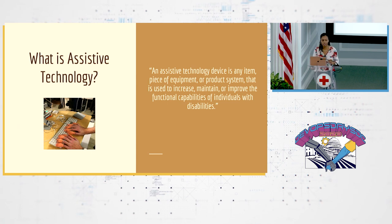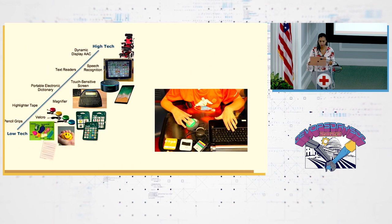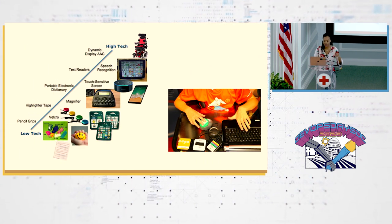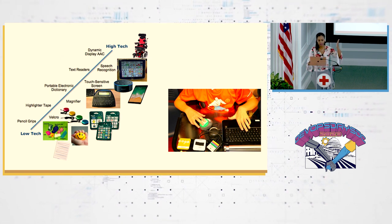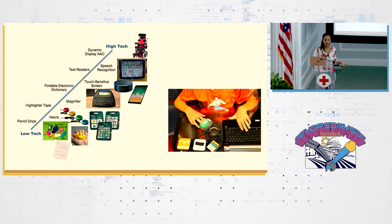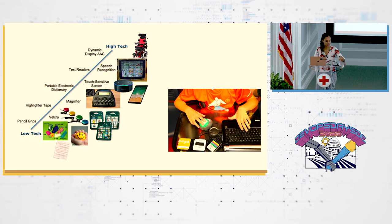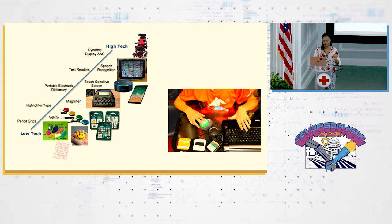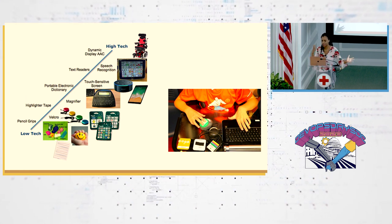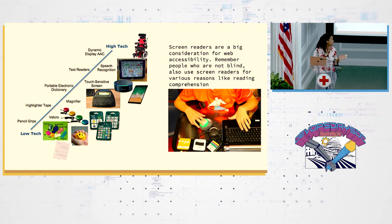Assistive technology is any piece of equipment or software that improves functional independence, specifically with use of computers or digital devices. It ranges from low-tech things like a pencil grip or velcro to high-tech things like speech recognition or advanced wheelchairs. In this context, we're usually talking about screen readers, switches for people with dexterity issues who can only tap a switch to select items, specialized keyboards, and speech-to-text. All of these need to work with whatever you're building. And remember — not only blind people use screen readers.